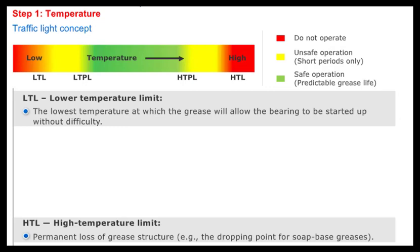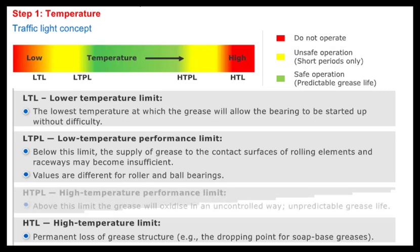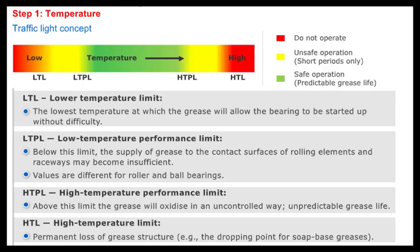The temperature range for reliable operation is indicated by the SKF values for the following limits. Low temperature performance limit, LTPL. High temperature performance limit, HTPL. Within these two limits, which is indicated by the green zone, the grease fulfills its function reliably and the relubrication interval or grease life can be determined accurately.